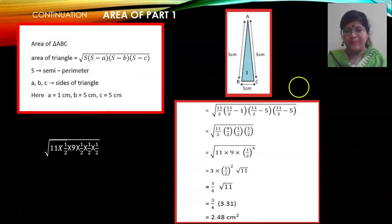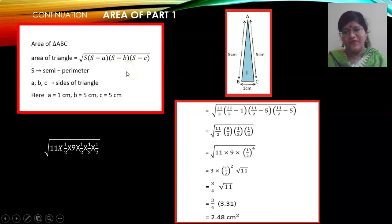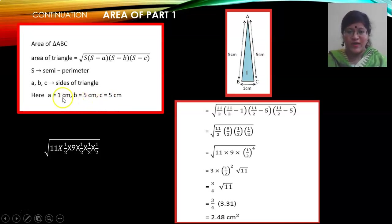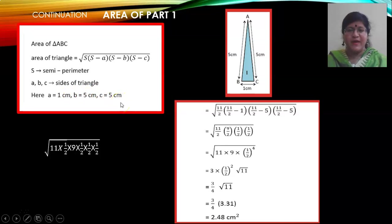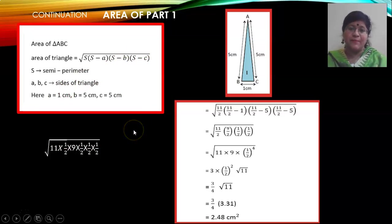Area of part 1. This is a triangle in which we are going to use Heron's formula. The first step is calculating the value of S, the semiperimeter. Semiperimeter is the sum of all the sides divided by 2. The sides are 1 cm (the base), 5 cm, and 5 cm. When you add them and divide by 2, you get the fraction 11/2. So the semiperimeter is 11/2. You can either keep it as a fraction or write it as a decimal number.